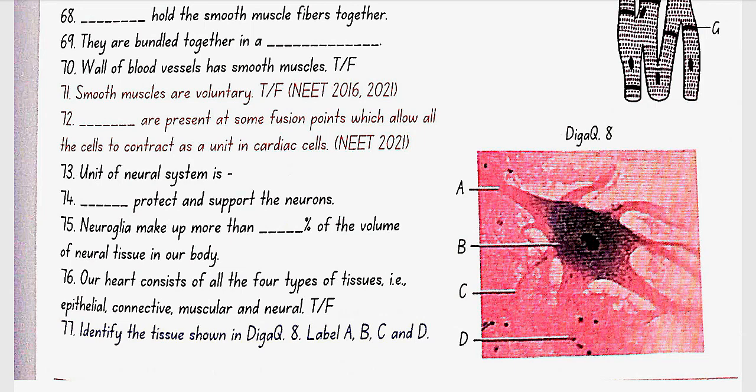Identify the tissue shown in diagram 8, label A, B, C, and D. Here in diagram 8, this is a neural tissue neuron with neuroglia where A is the axon, B is cell body with nucleus, C is the dendrite, and D is the neuroglia.